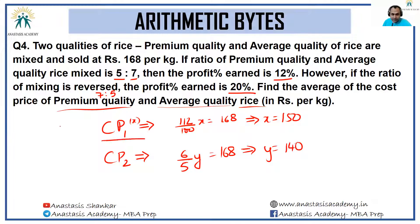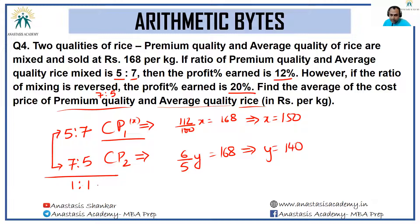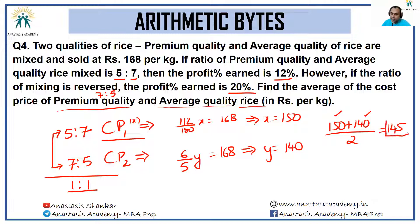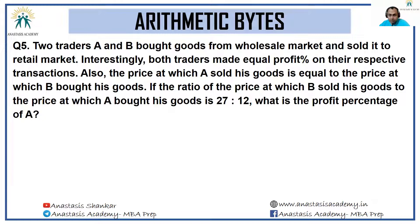When rice was mixed in ratio 5:7 the CP was ₹150, and in ratio 7:5 the CP was ₹140. If both these quantities of rice were combined, we'd have them in the ratio 1:1. So all we need is the average of the cost of premium quality and average quality: (150 + 140) / 2 = 145. The answer to the question is ₹145 per kg.